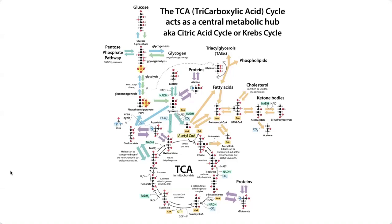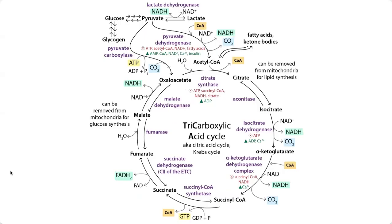One of my favorite things about the citric acid cycle — your TCA, your Krebs cycle — is that it's able to integrate components from all these different metabolic pathways. And because it's able to integrate all of that, it needs to be highly regulated. This regulation is going to be highly logical, and it's going to take into account all those different pathways that are feeding into it, as well as what's going to happen to its products.